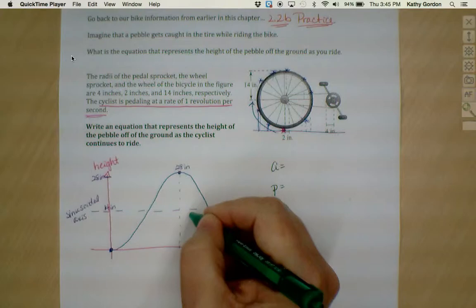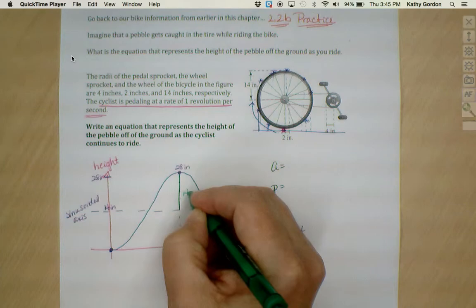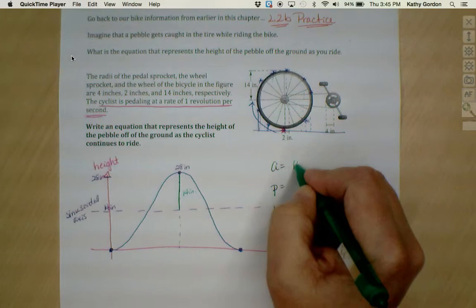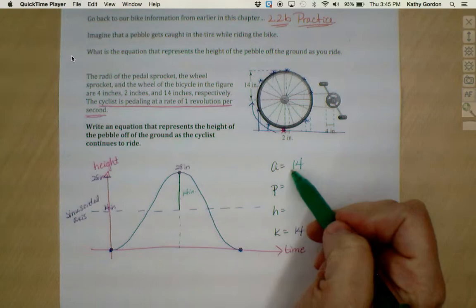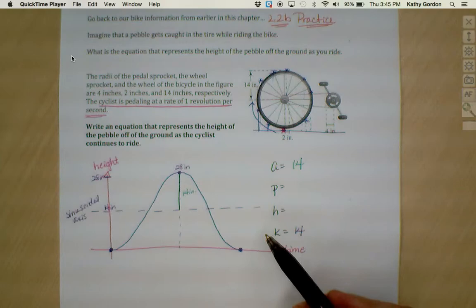My K value is 14 because I moved up that much. Now for my distance from the sinusoidal axis to the max point, that is also going to be 14 in this case. So I've got 14 for amplitude. However, is this going to be positive or negative 14?